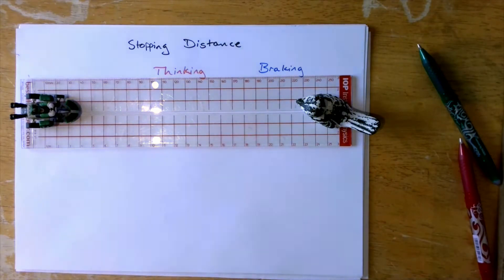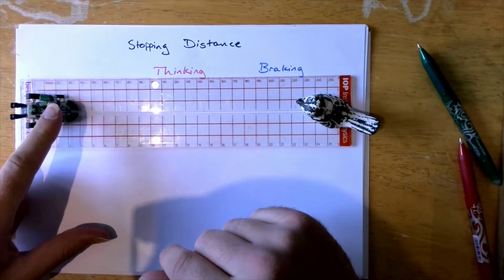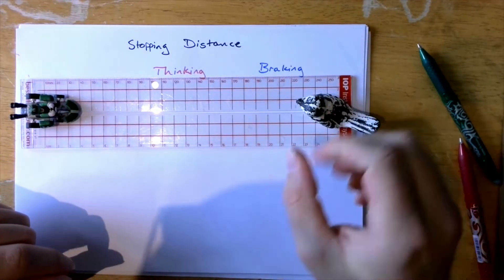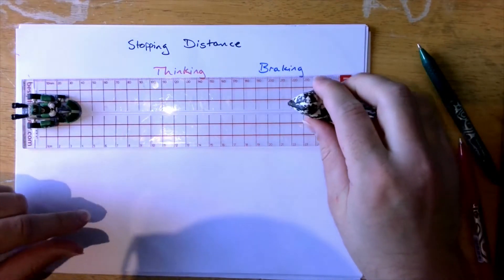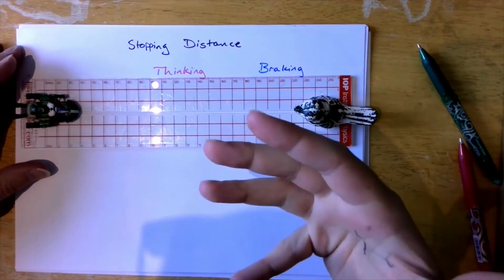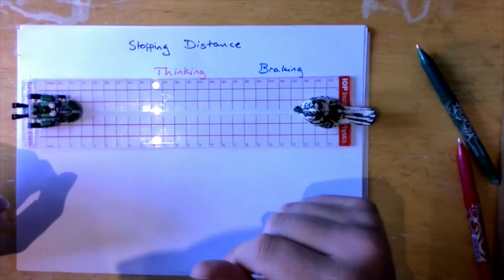All right, stopping distance. Now I'm going to use this little green car and this little black and white bird to kind of illustrate what the idea is behind this idea of stopping distance.